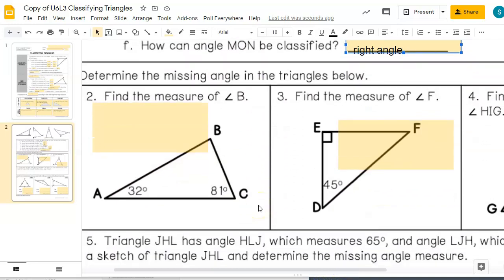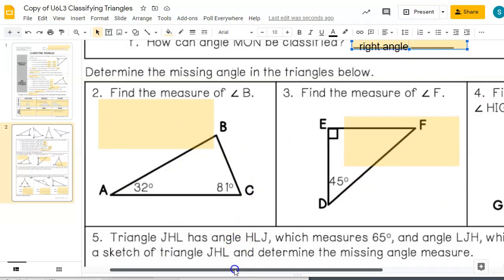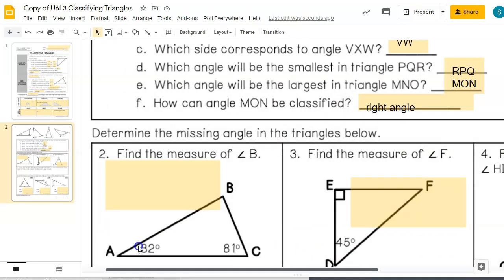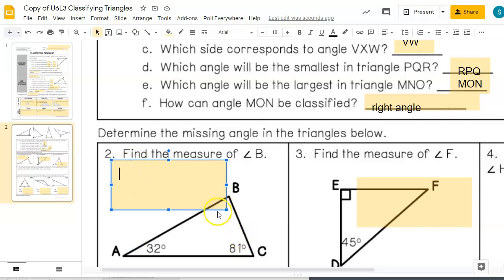Determine the missing angle for the triangles below. So we know that these three have to add up to 180. So we've got, I'm going to label this one X just for now to be able to figure it out. So let's say X plus 81 plus 32 equals 180. So if I subtract 81 from both sides, I get X plus 32 equals 99. That means X equals 67.